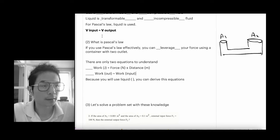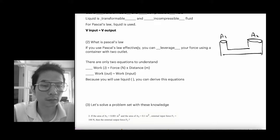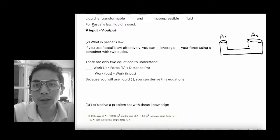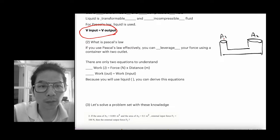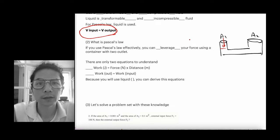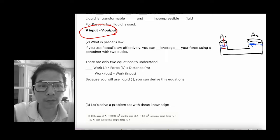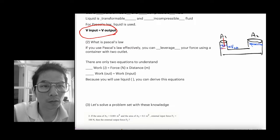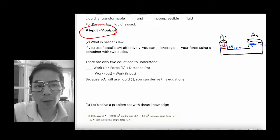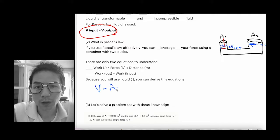Another important thing is volume. Using the definition of incompressibility, volume input equals volume output. Basically, you place some liquid here, and the volume placed at the input is always equal to the volume output. You can also apply the equation: volume equals area multiplied by distance.